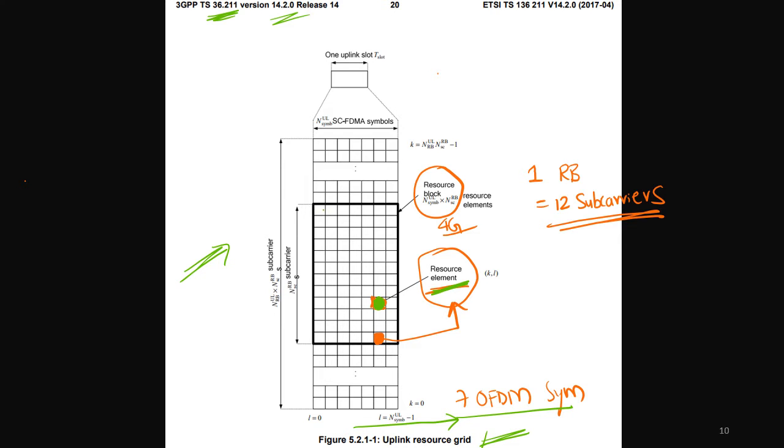And this block corresponds, this one particular square box corresponds to one subcarrier and one OFDM symbol. So like that if there are twelve subcarriers and in the x-axis if there are seven OFDM symbols, that is called as one resource block in case of 4G. But if you want to just talk in terms of subcarrier, twelve subcarriers would constitute one RB.